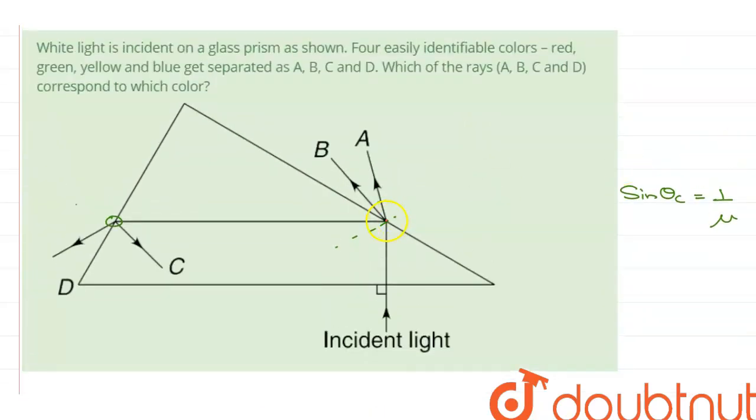Now, back on this junction, if this is normal to the surface, then the angle of refraction R B is greater than R A. And if R B is greater than R A, that means mu for B is greater than mu for A.